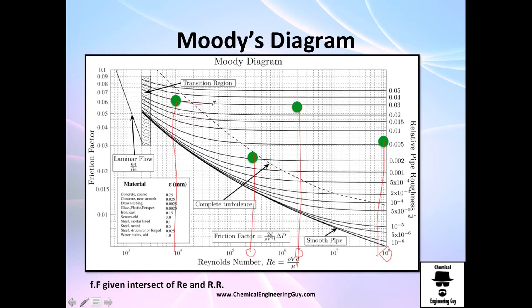These are actually the same pipe as you can see, relative roughness is the same. The only thing that changed was the Reynolds number. This is another pipe with this relative roughness and this is another pipe with this relative roughness.